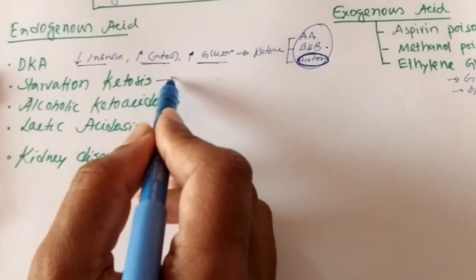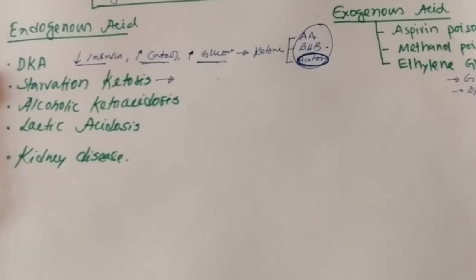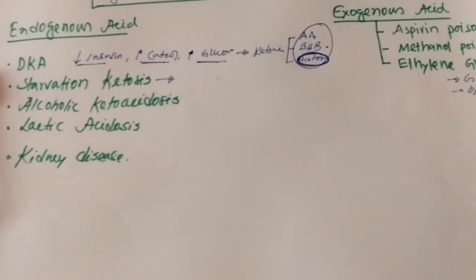In starvation ketosis: why do some people develop starvation ketosis? Starvation ketosis develops when food intake is decreased in a situation of high glucose demand.